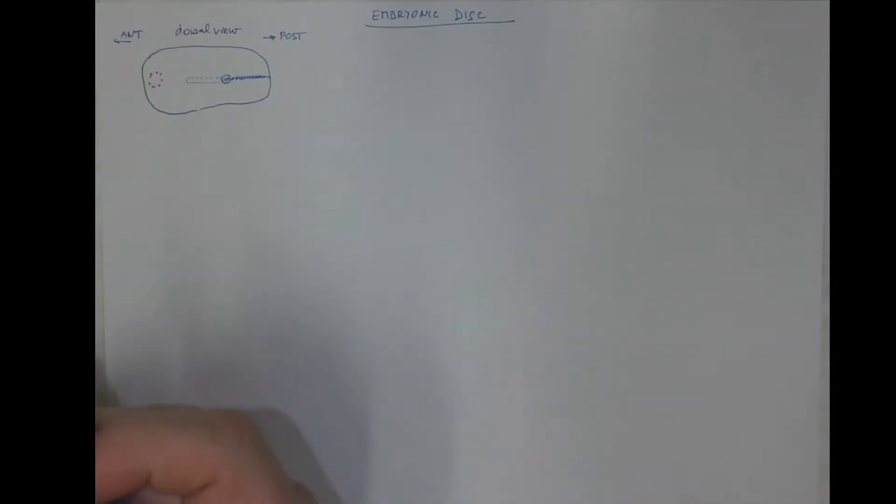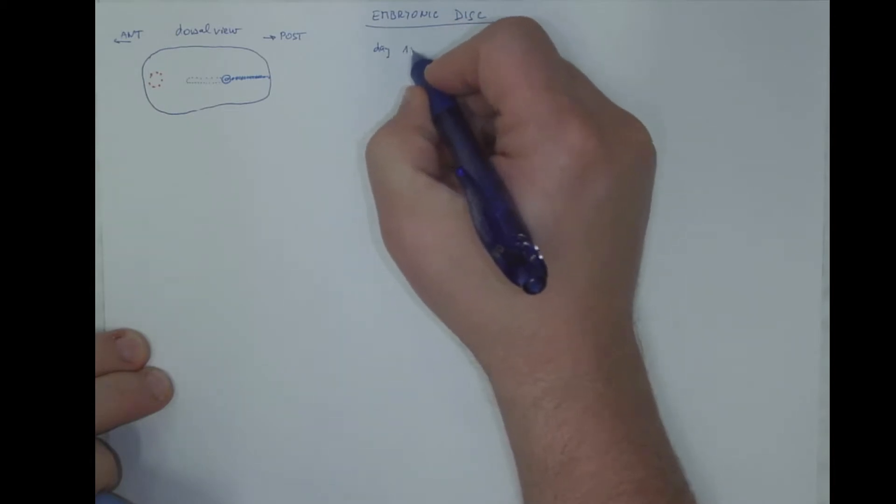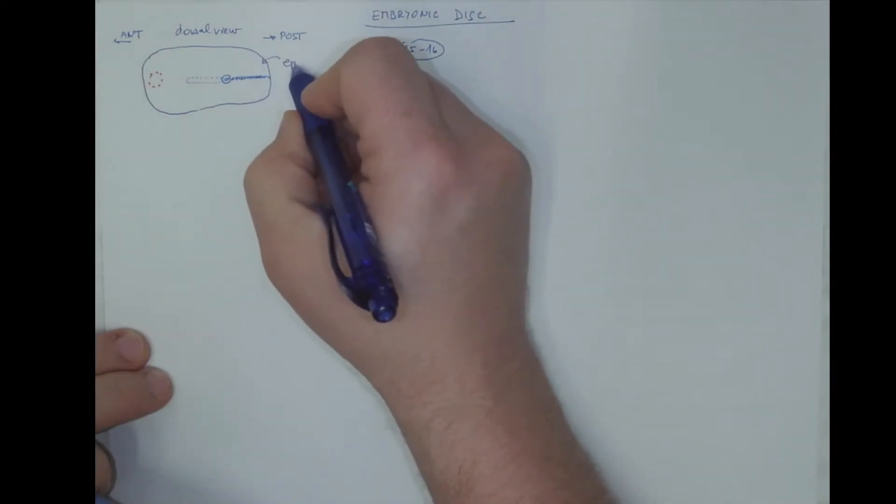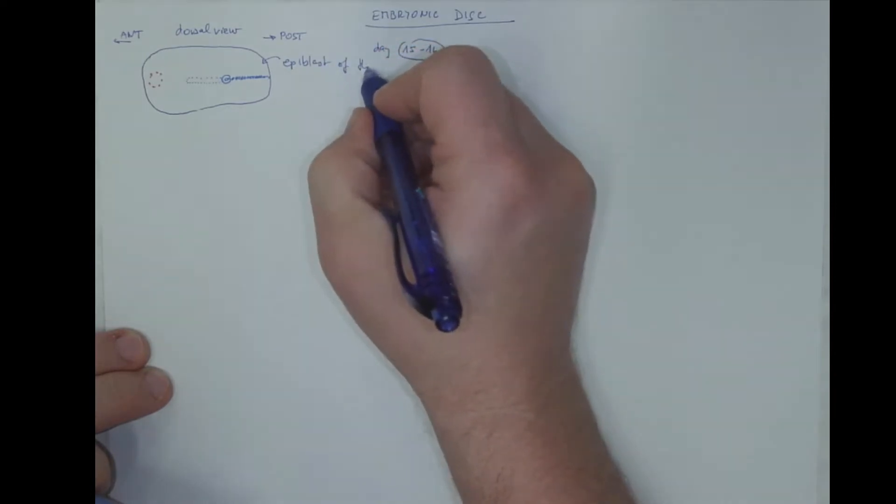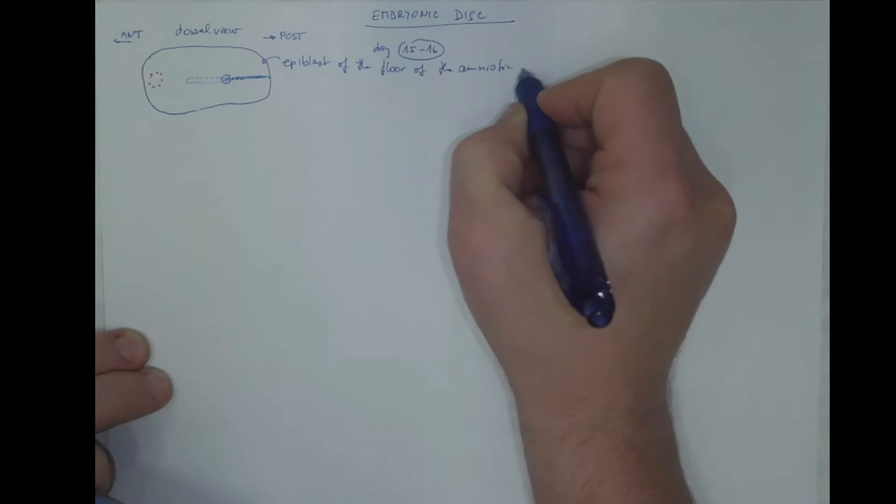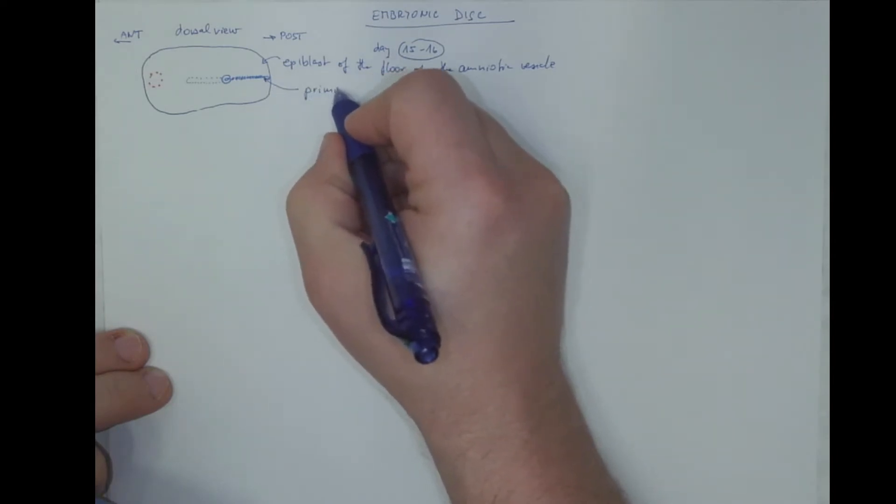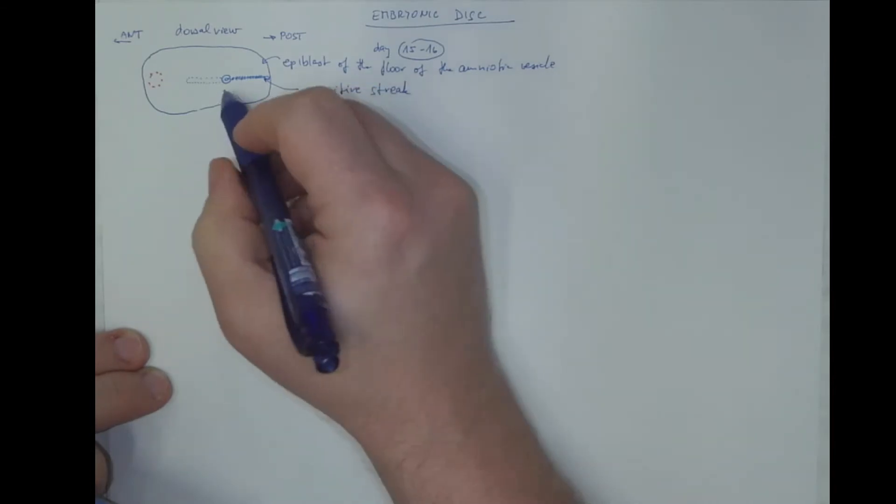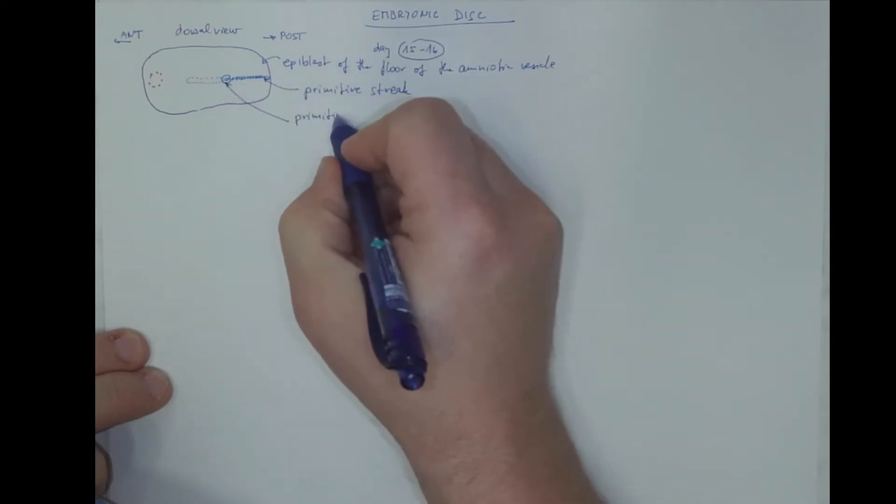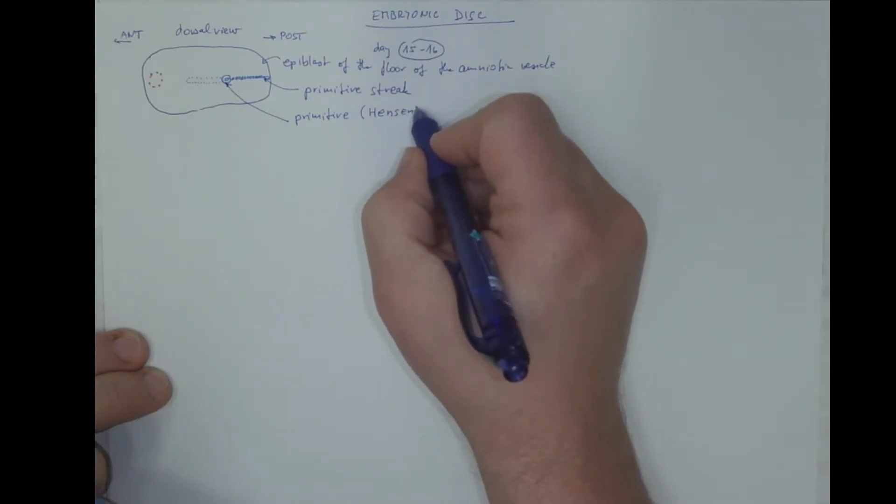So this is a dorsal view on the embryonic disc at day, let's say, 15 to 16 after fertilization. This is the epiblast of the floor of the amniotic vesicle, which in the midline is thickened to form the primitive streak, which ends with the primitive node, sometimes also called with eponym Hansen's node, H-E-N-S-E-N.